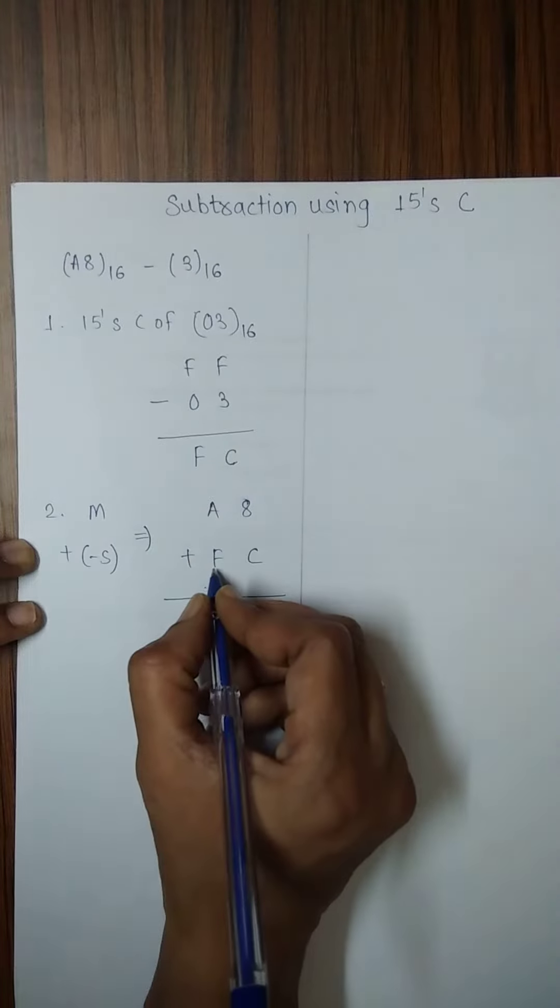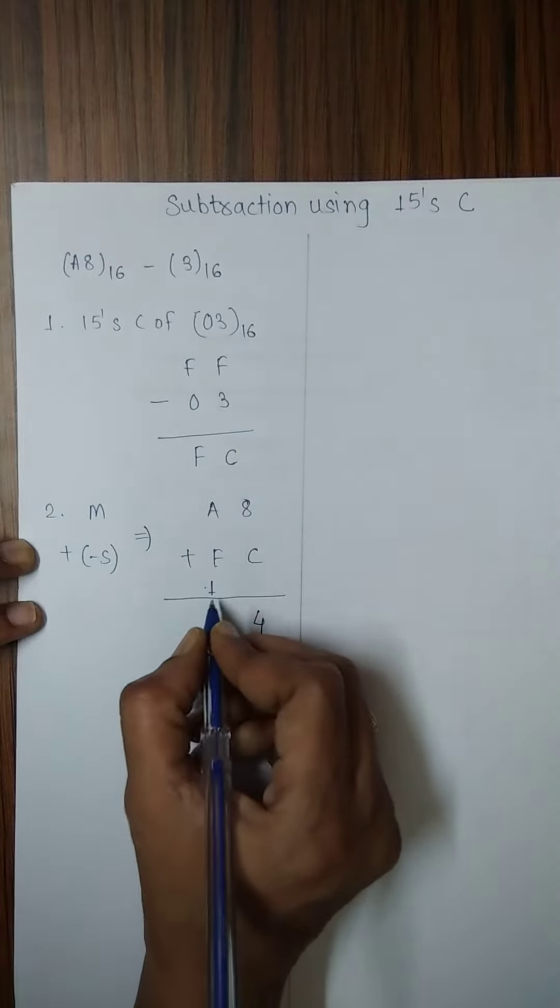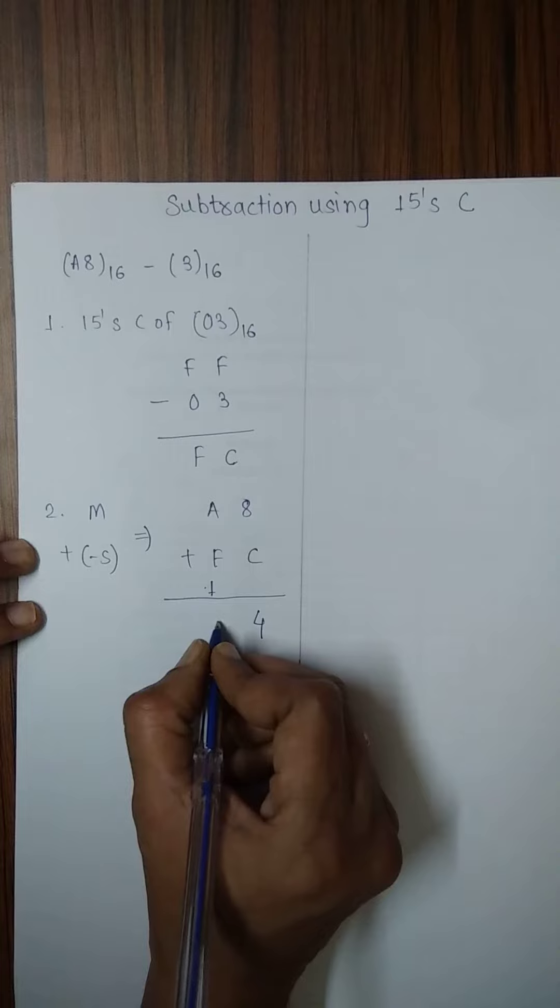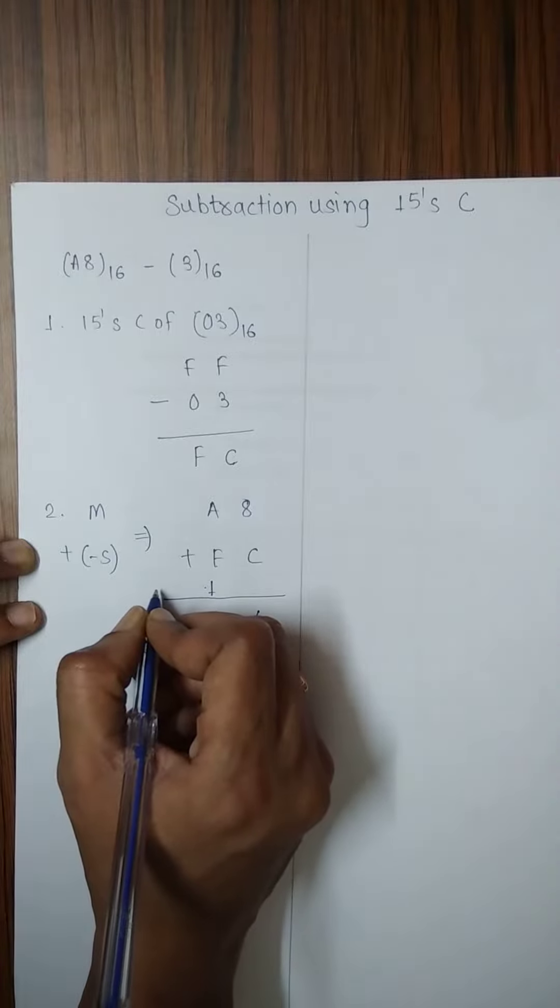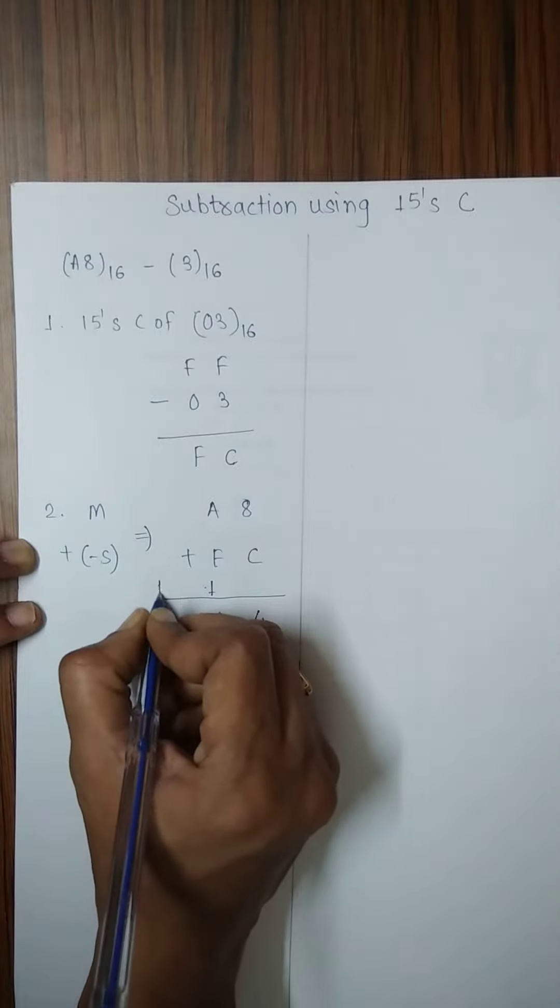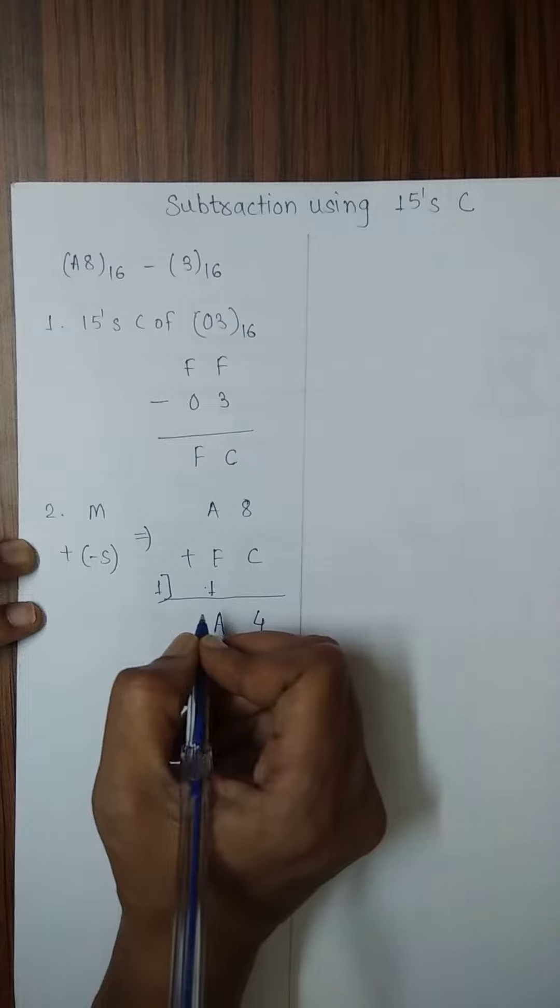A is 10 plus 15, which is 25 plus carry 1, equals 26. 26 modulus 16 is 10 which is represented by character A, and 26 divided by 16 generates carry 1.